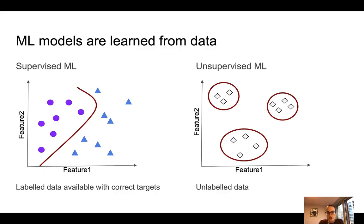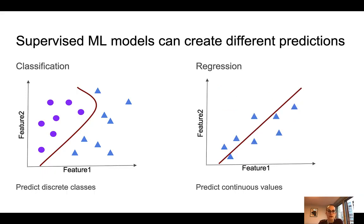In supervised machine learning, we differentiate further between classification and regression. This differentiation is made based on the target the model tries to predict. For classification, the model aims to predict a discrete class. A common example would be to predict whether there will be rain tomorrow — so our target would be a binary feature, a yes or a no. In regression models, the aim is to predict a continuous value, such as how much rain will there be tomorrow. So rather a simple differentiation.